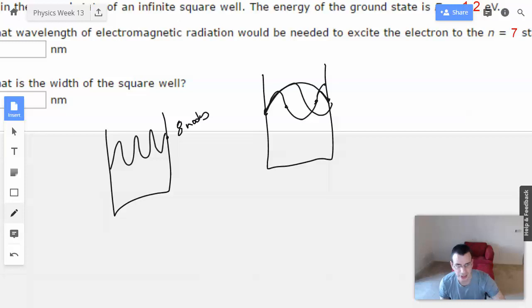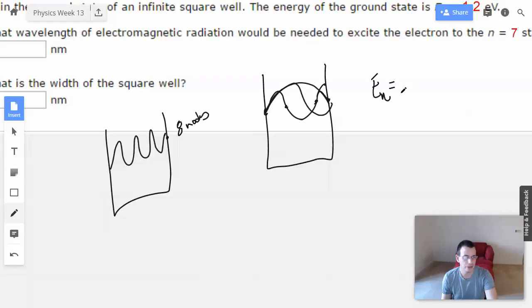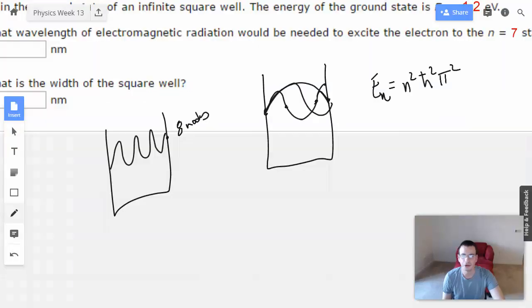So I'm going to say that E for the nth level equals, what is it, n squared h bar squared, I think there's a pi squared, over 2 m l squared.